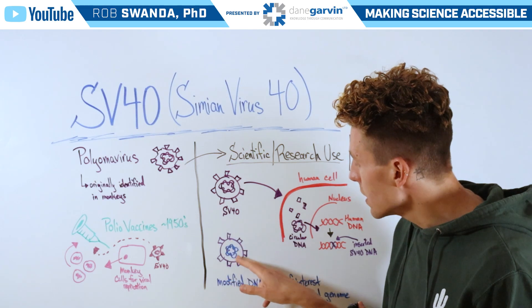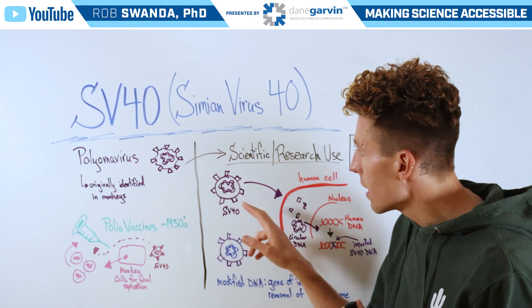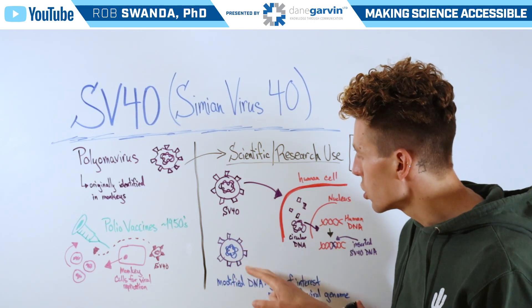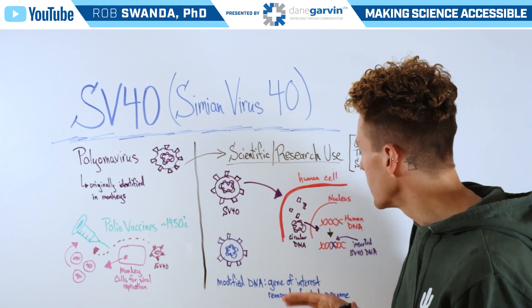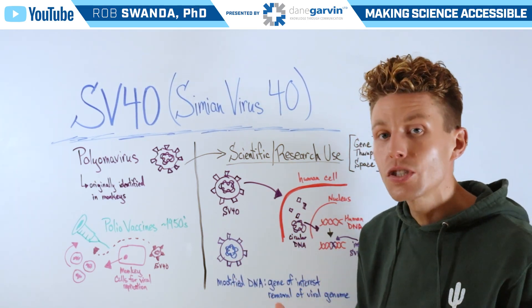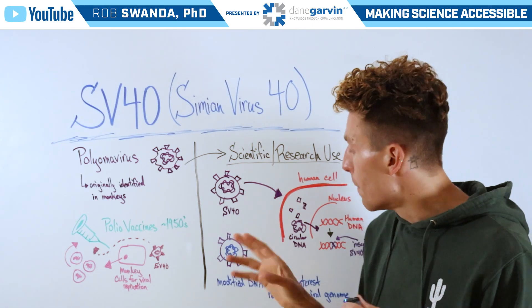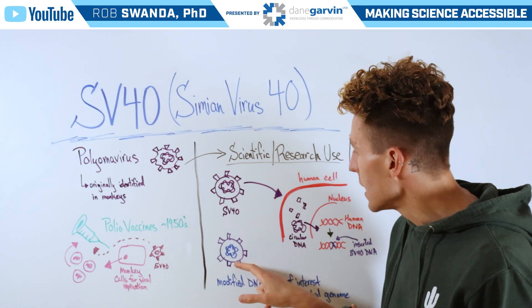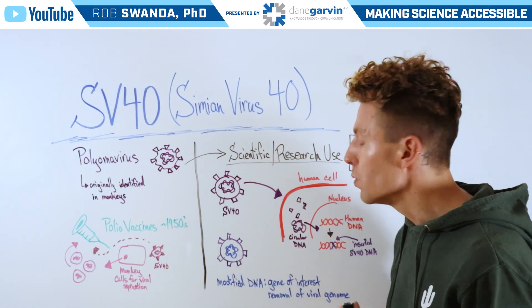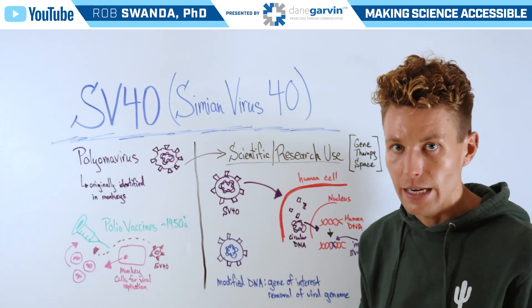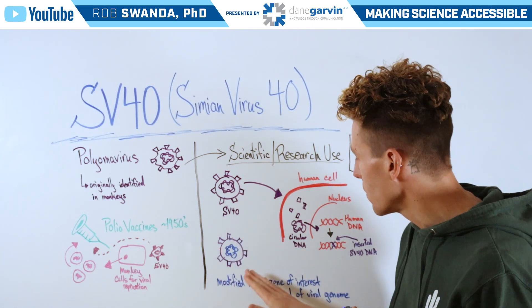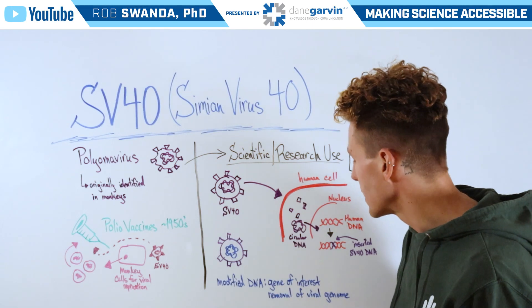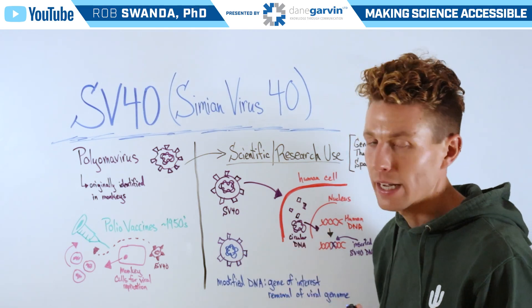That gene of interest is inserted inside of the SV40 shell. It's then used to infect human cells and insert that modified DNA into the human DNA. You can almost think of the SV40 acting as a delivery mechanism.